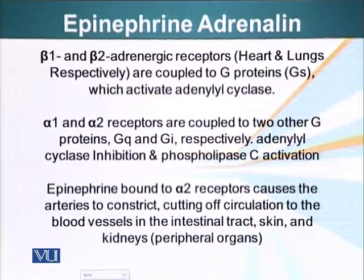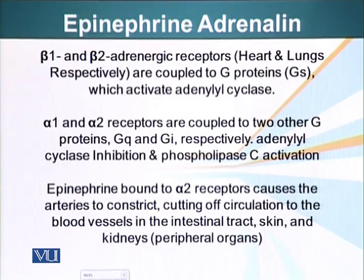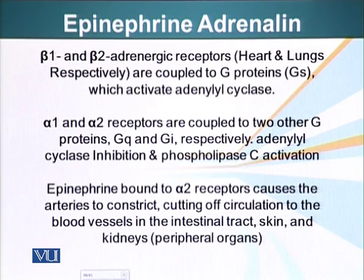There are about nine different types of epinephrine receptors on different types of cells. Beta-1, for example, are on heart cells. Beta-2 are on lung cells. They are coupled to G-S, G-stimulatory proteins, which activate adenyl cyclase. Alpha-1 and alpha-2 receptors are coupled to two other G-proteins, G-Q and G-I. G-Q proteins activate phospholipase C, and G-I basically inhibits adenyl cyclase.